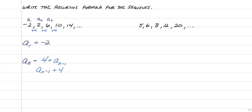You can always go check your formula. Check a sub 3: 4 plus the previous term of 2 equals 6. That's correct. So a sub n equals 4 plus the previous term, and that works for this sequence.